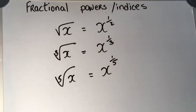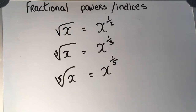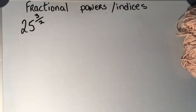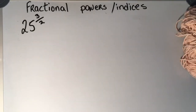Summarizing: the square root of x is x to the power of 1 half — remember, there's a 2 underneath the square root. The cubed root of x is equal to x to the power of 1 third. And the fifth root of x is equal to x to the power of 1 fifth.